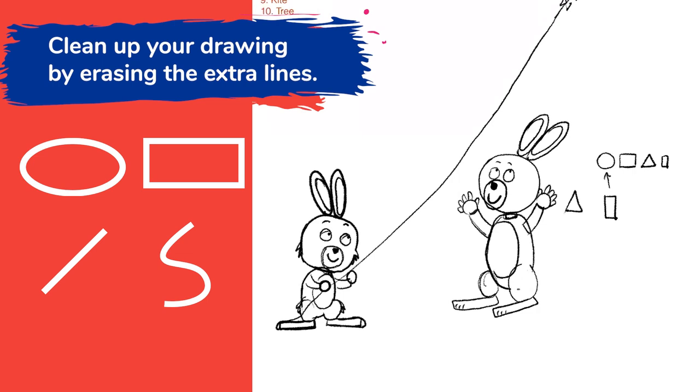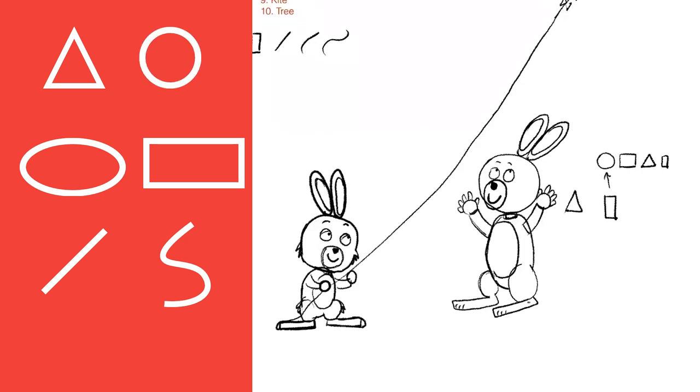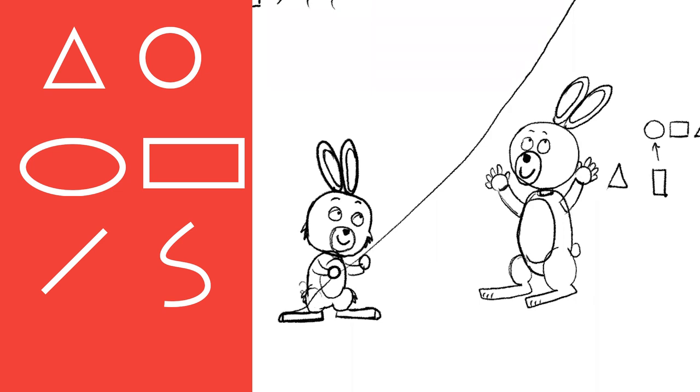Oh, do bunnies have tails? We forgot about the tail. What shape should we draw with the tail? Yeah. Okay. Add little tails to our bunnies. Okay. So, we have two brother bunnies flying their kite. Good job.